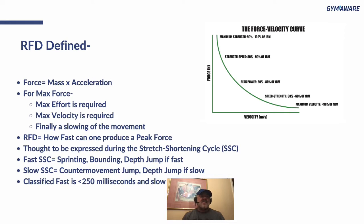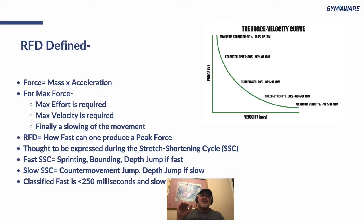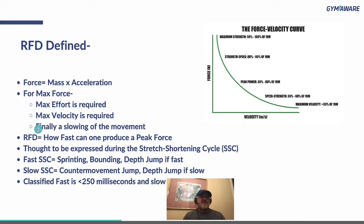Rate of force development — so force equals mass times acceleration. For maximum force you need three things: maximum effort, maximum velocity, and finally a slowing of the movement, meaning you're going so heavy that the bar slows down. We're looking at somewhere around 0.3 meters per second or slower for really grinding to produce maximum force.